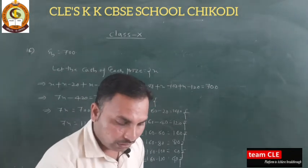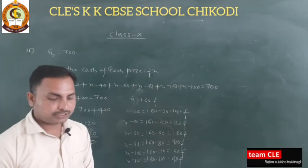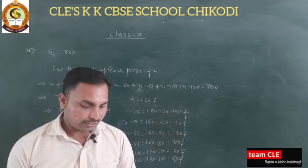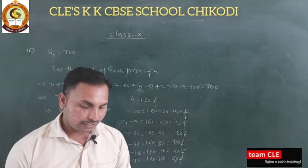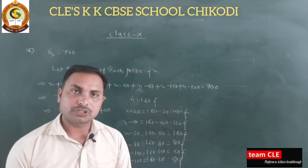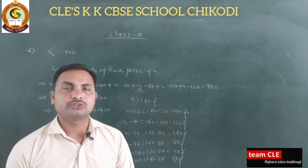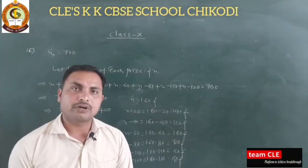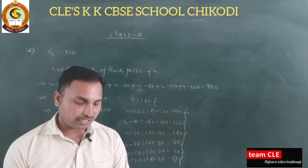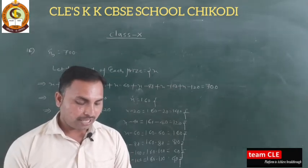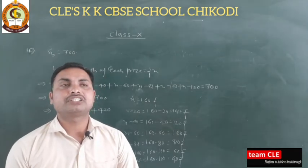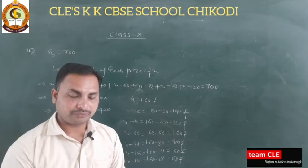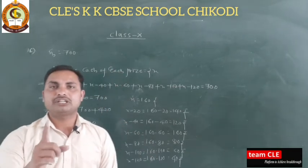Now we move to question number 17. In a school, students thought of planting trees in and around the school to reduce air pollution. It was decided that the number of trees each section of each class will plant will be the same as the class number — for example, if you are in class 1, you plant 1 tree.